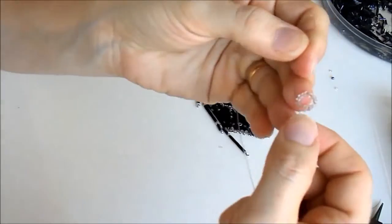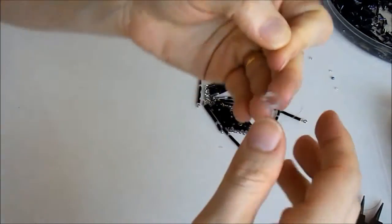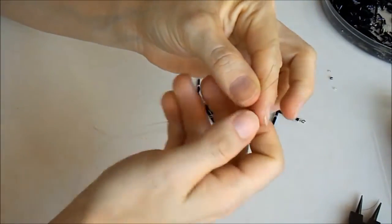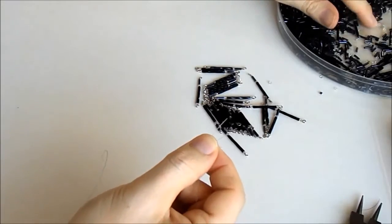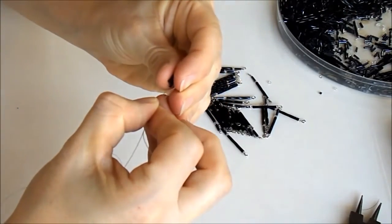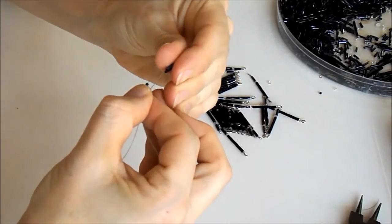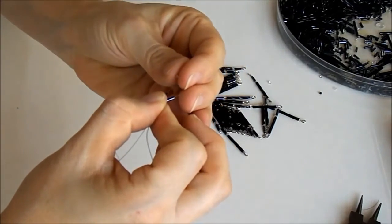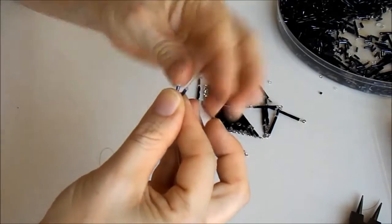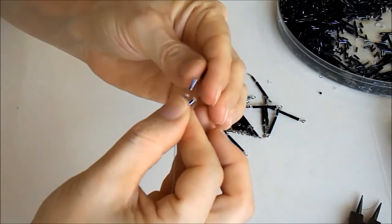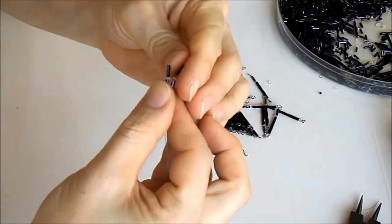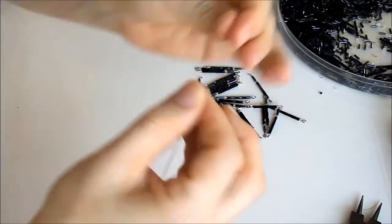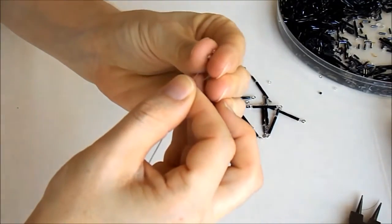Acabei no meinho, formou essa voltinha aqui. Agora eu começo a preencher. Vou colocar um canutilho de cada lado, mais uma miçanga de cada lado, mais um canutilho de cada lado. Agora eu coloco cinco miçanguinhas de cada lado.